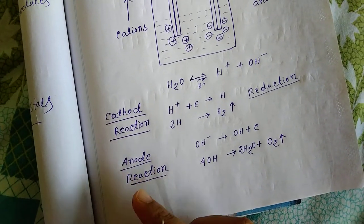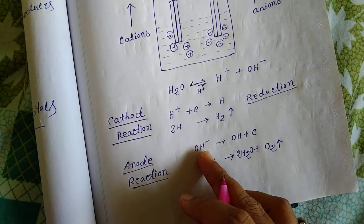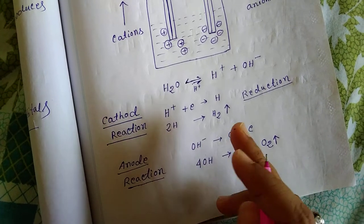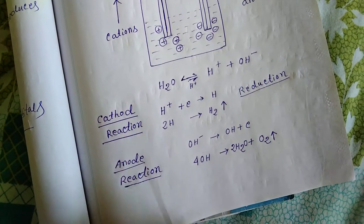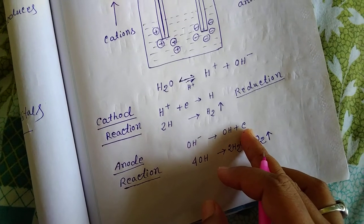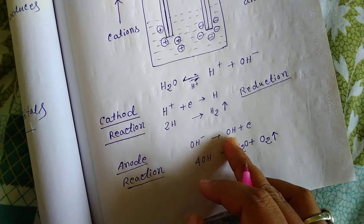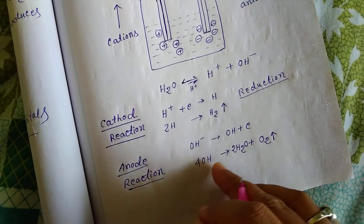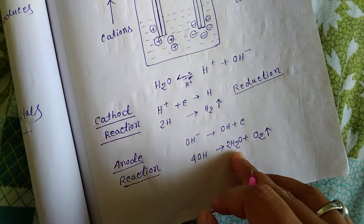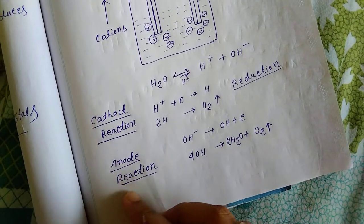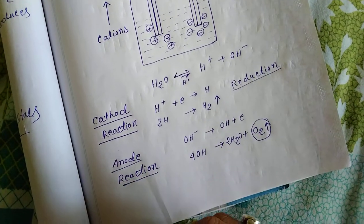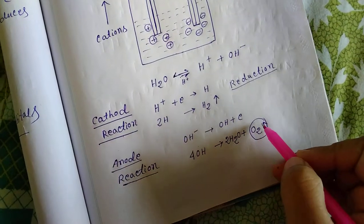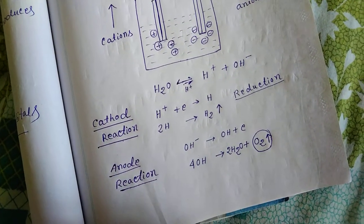For the anodic reaction: OH⁻ anions go towards the positive electrode, that is, the anode. OH⁻ releases electrons at the anode and becomes neutral. Four OH units combine to form oxygen and water. So at the anode, oxygen gas is produced, and at the cathode, hydrogen gas is produced in the electrolysis of water.